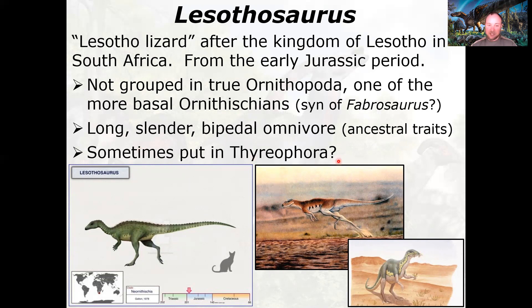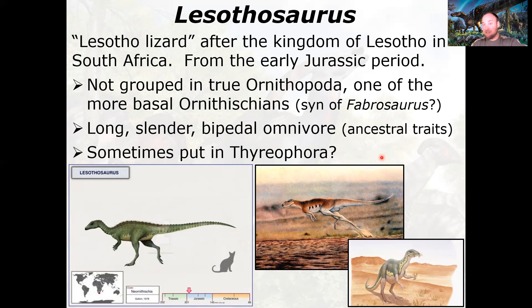Sometimes these basal forms are put in with the Thyreophora, the armored dinosaurs. They have traits of many different classes that come later — a grab bag — and it's very difficult to put them definitively in one bin because these lines are artificial. Where do we draw the boundaries between clades? It's easy to distinguish the very derived forms — duck-billed hadrosaurs versus horn-faced ceratopsians — but the basal forms resemble each other pretty closely.